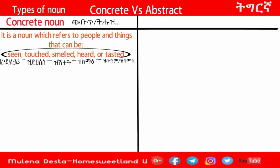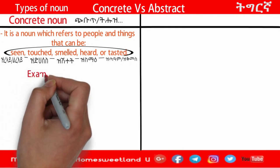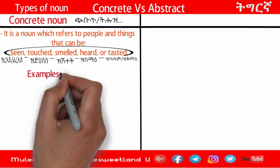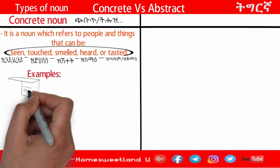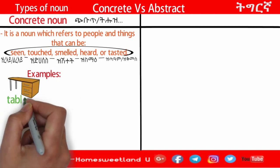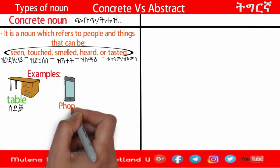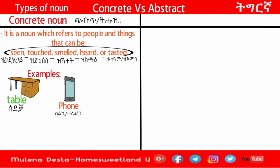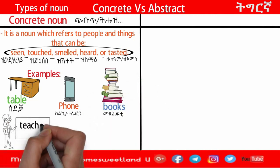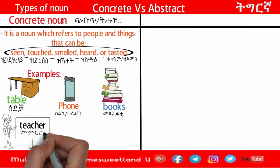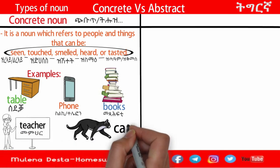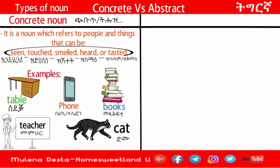Now for examples. The first example is table. We also have a phone — the phone we have here. We have books, teacher, and cat. These are examples of concrete nouns.